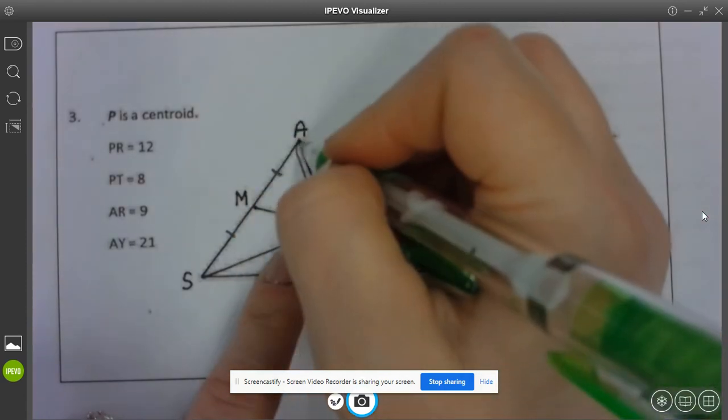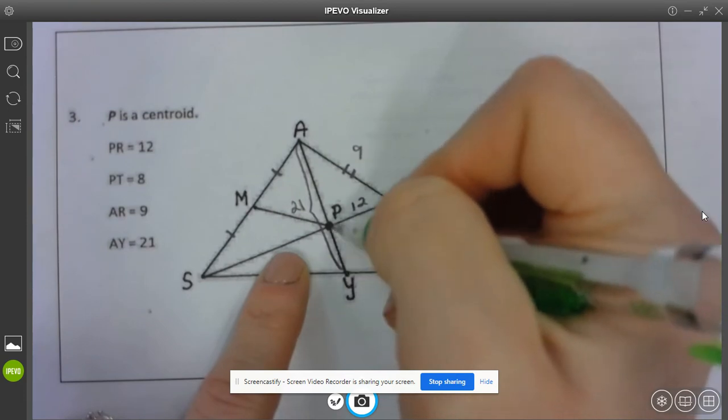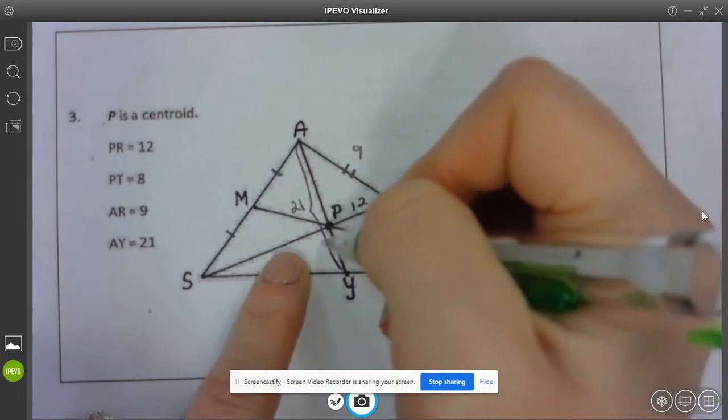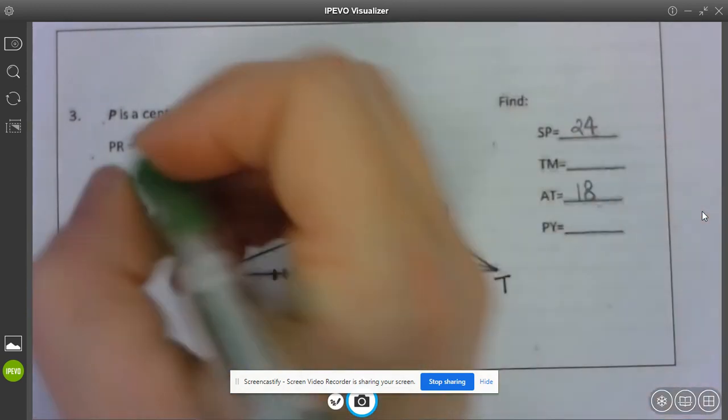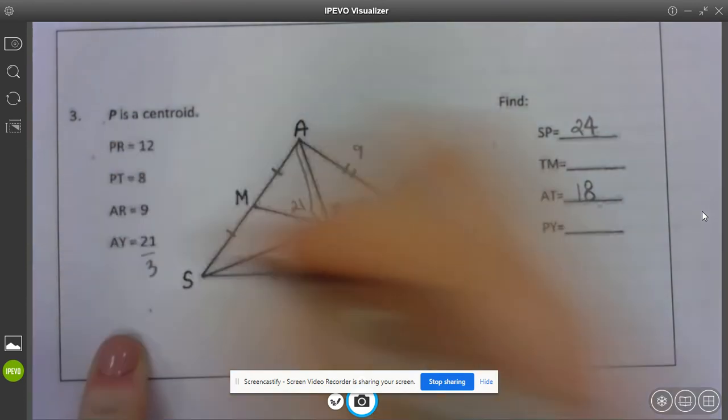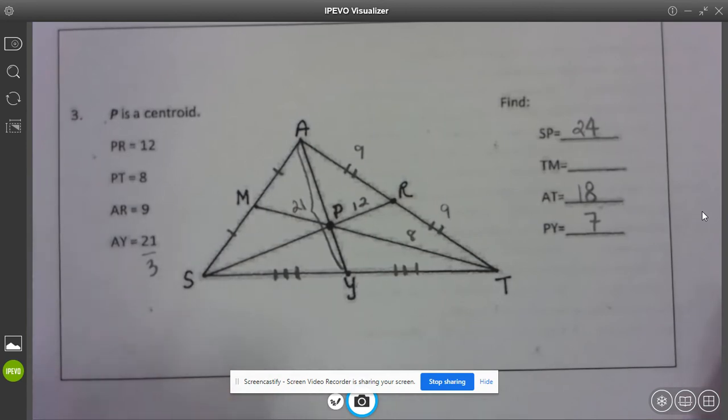I'm going to take AY and find PY here. This piece here is a third of my whole segment so if I divide this by three that tells me that PY should be seven.